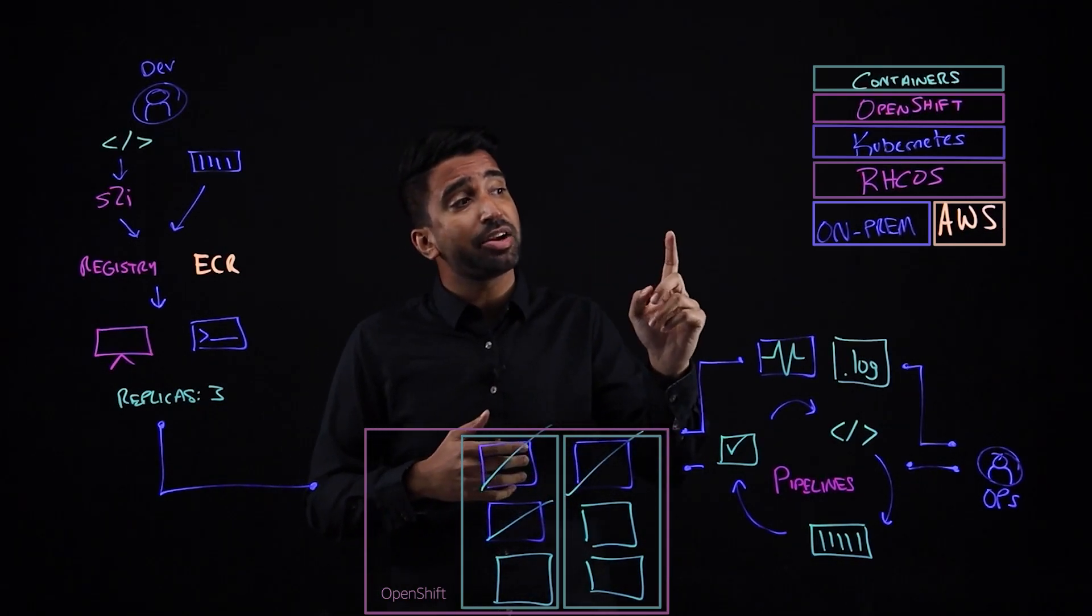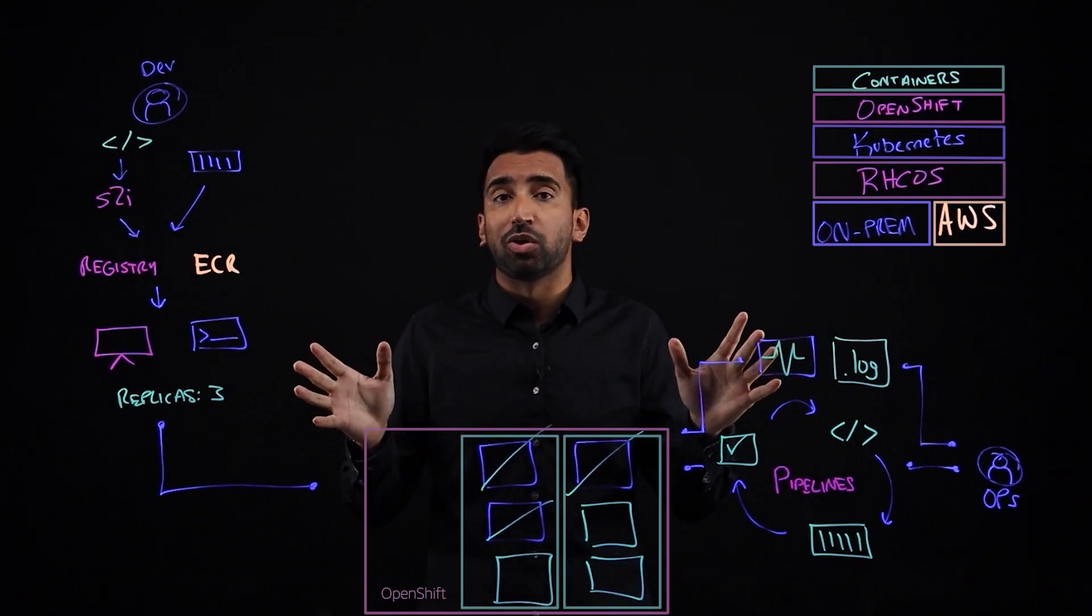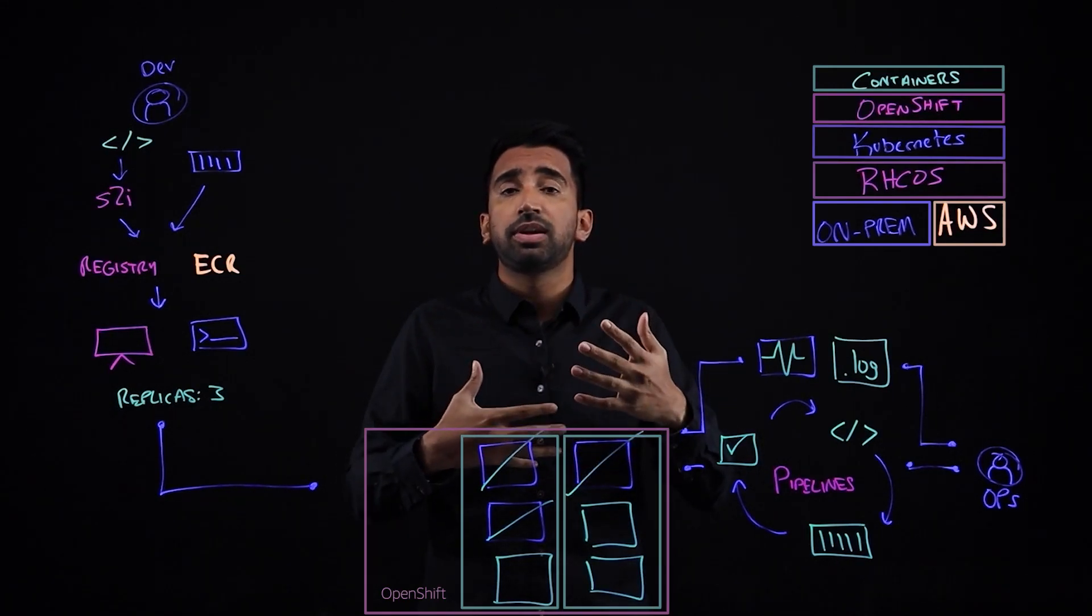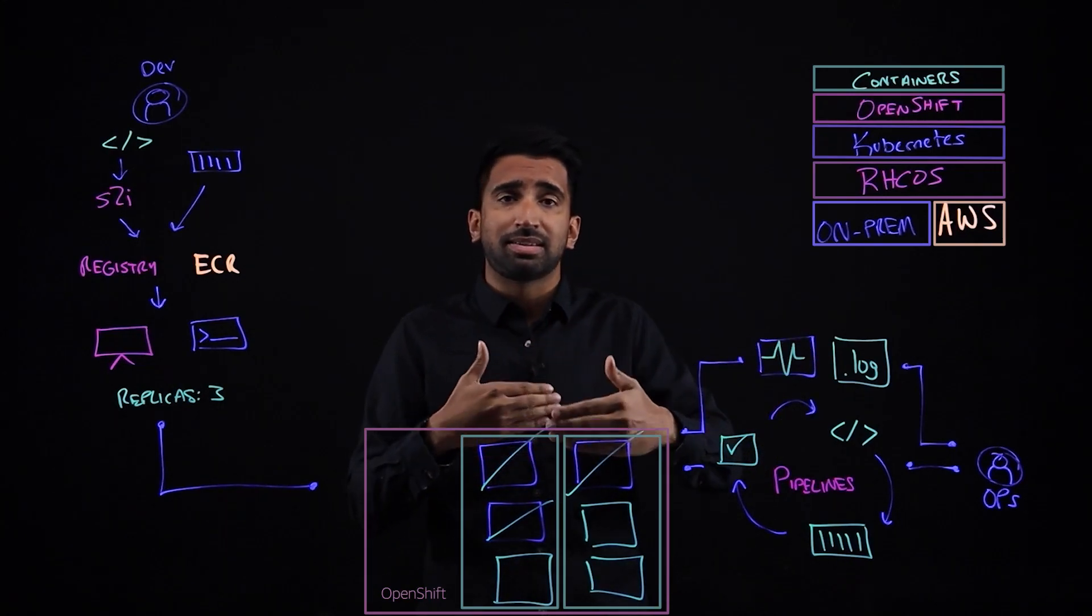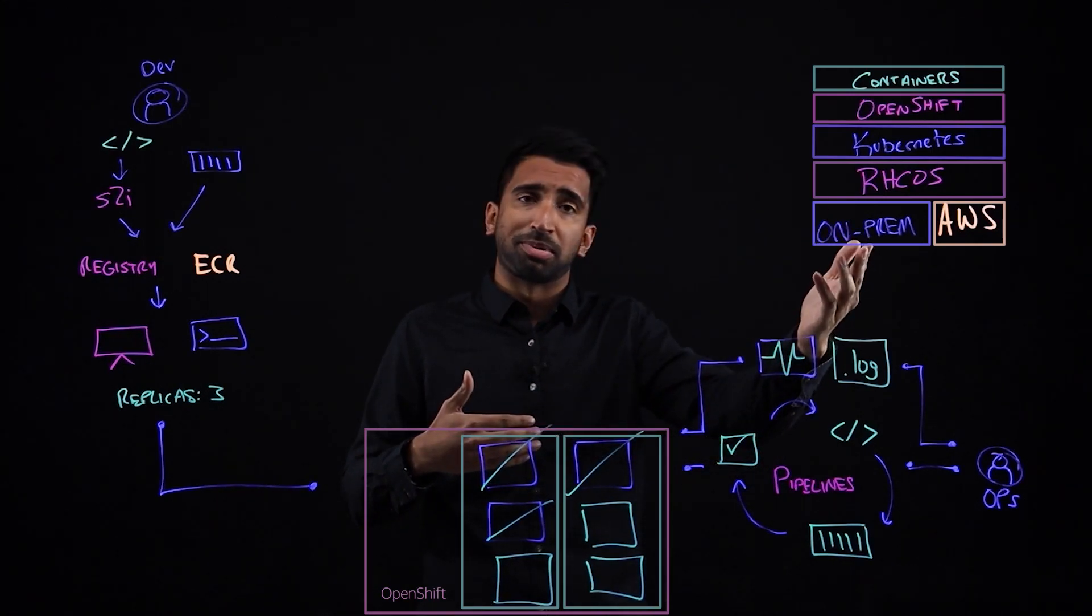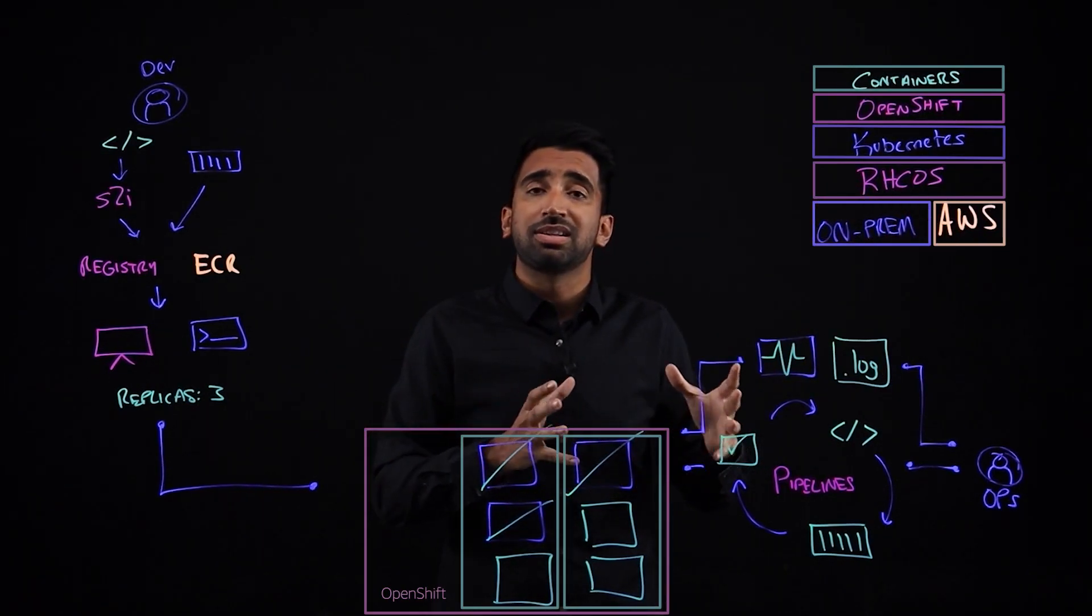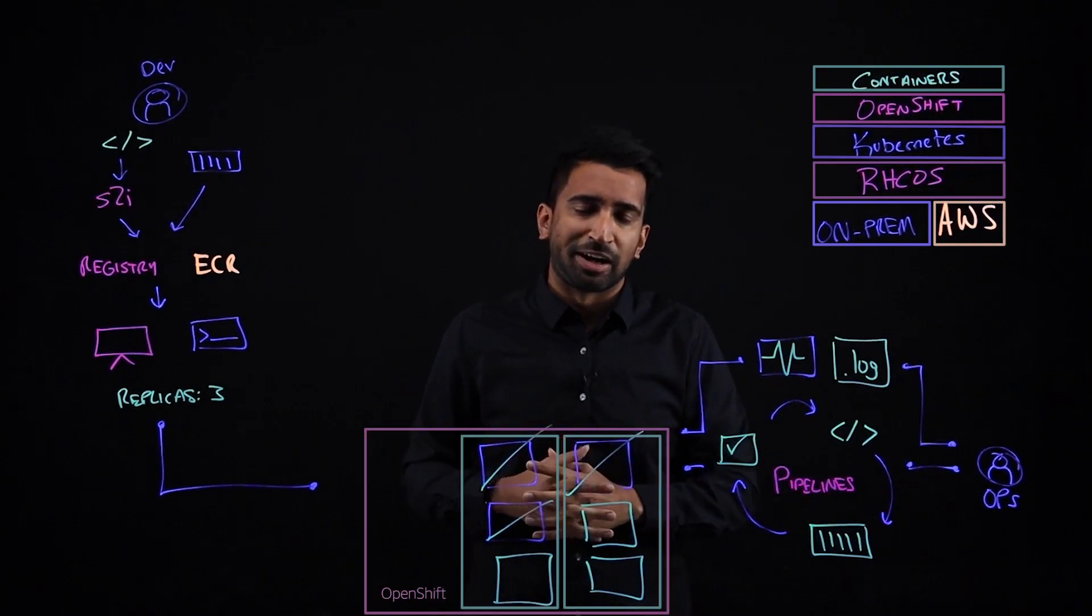In addition, we talked about how OpenShift runs on premises and on AWS. This is critical, because at the end of the day, we want customers to be able to successfully modernize and migrate to the cloud. So maybe to do that in a step by step process, they're running OpenShift on premises and then they deploy OpenShift on the cloud. And that migration is that much easier because OpenShift looks very similar whether you're running it on premises or in the cloud.